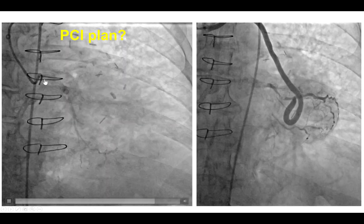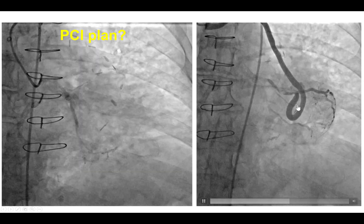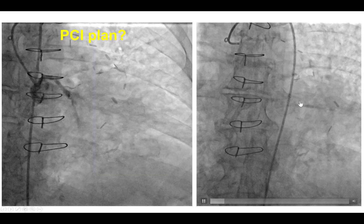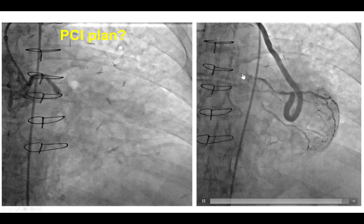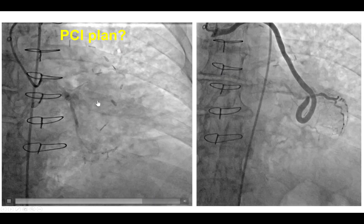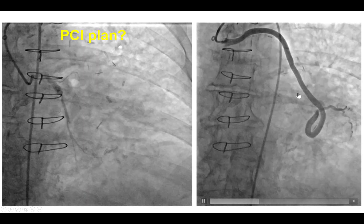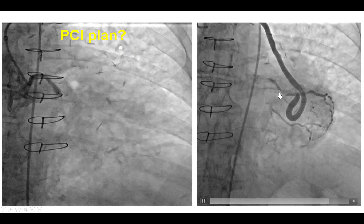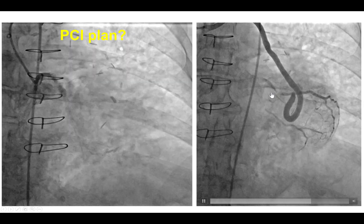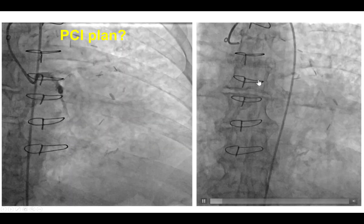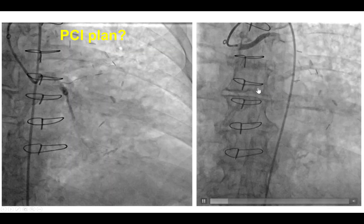How to approach this? One approach would be to go antegrade and wire into the OM2 and stent around it. The second approach would be to go retrograde through the SVG and then either stent this lesion or stent even more proximally. In general, when we have previous bypass graft patients, one wants to treat the native coronary artery as much as possible. The challenge is that the native coronary artery often has significant calcification, and especially in the circumflex there is significant tortuosity.